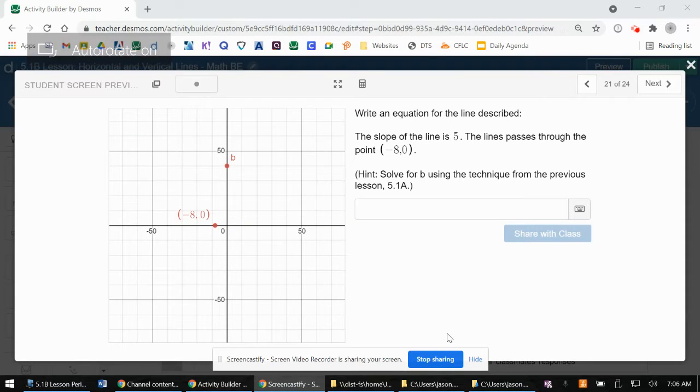Write the equation for the line described. The slope of the line is 5, and the line passes through the point (-8, 0).